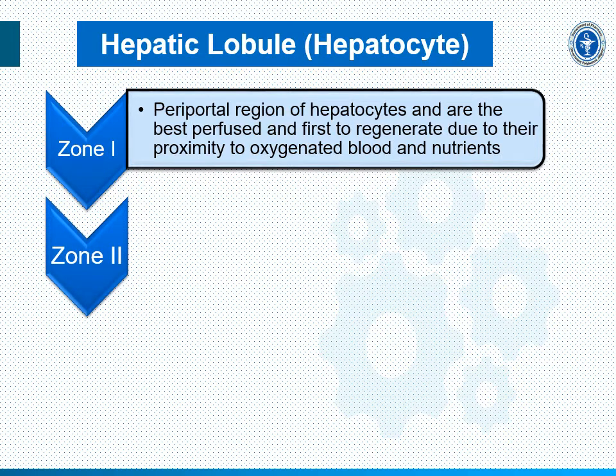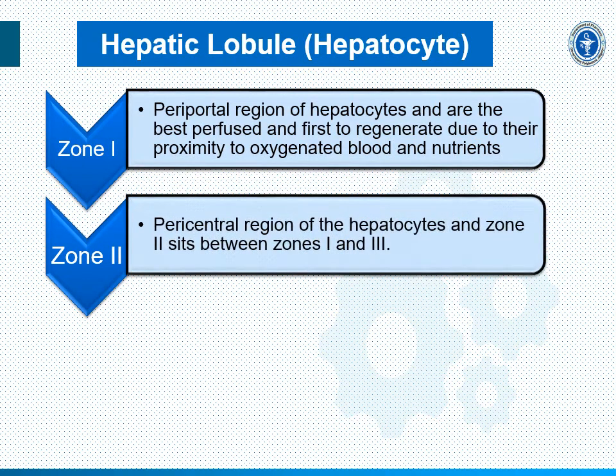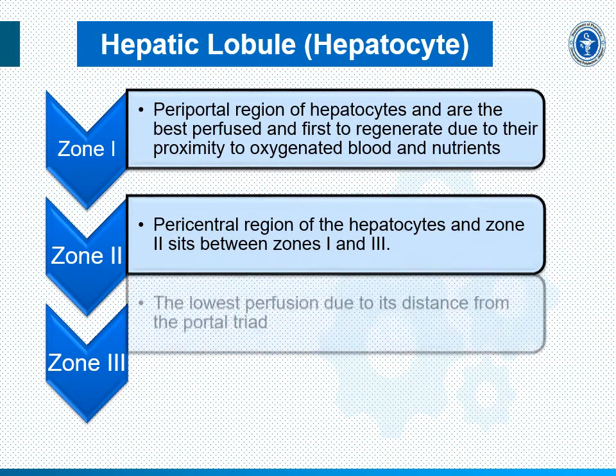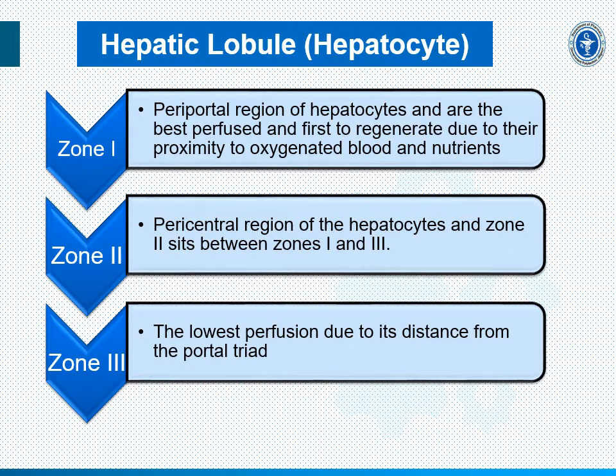Zone 2 is the pericentral region of the hepatocytes, sitting between zone 1 and zone 3. Zone 3 has the lowest perfusion, due to its distance from the portal triads. These are the important regions under the hepatocyte where perfusion and functional roles of hepatocytes are determined.